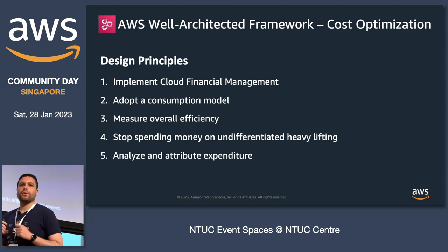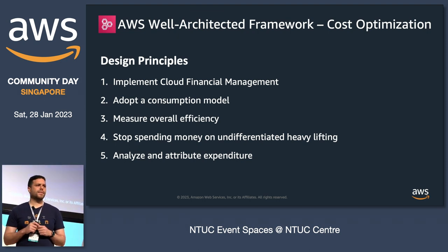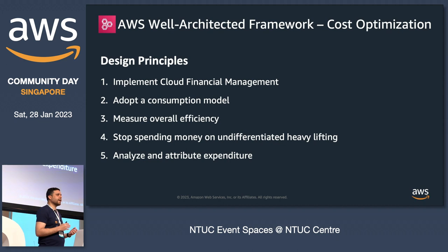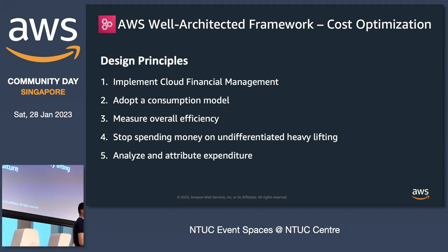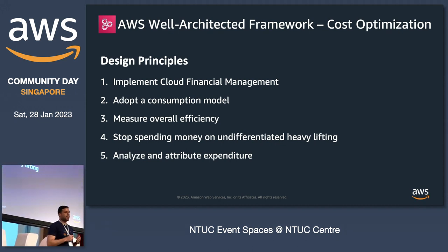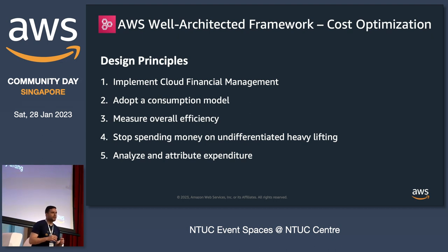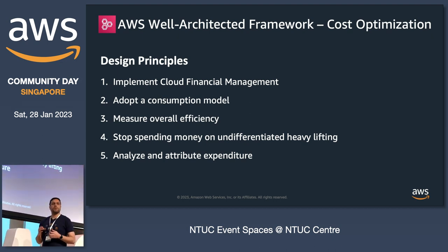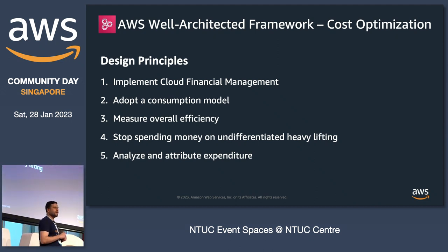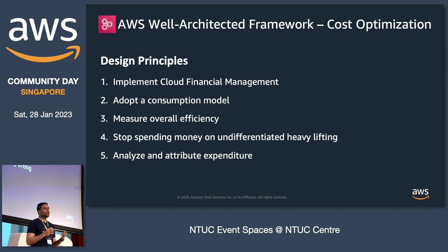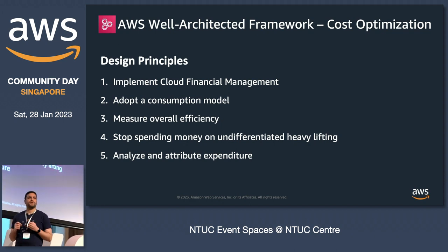Number four: stop spending money on undifferentiated heavy lifting. The cloud nowadays takes care of the heavy lifting of data center operations — such as racking, stacking, and powering servers. It also removes the operational burden of managing operating systems and even some applications by using AWS managed services. This allows you to focus more on business projects and on your customers rather than focusing on IT infrastructure.